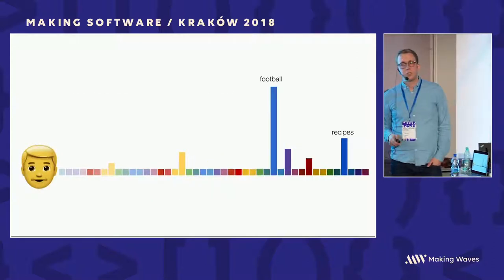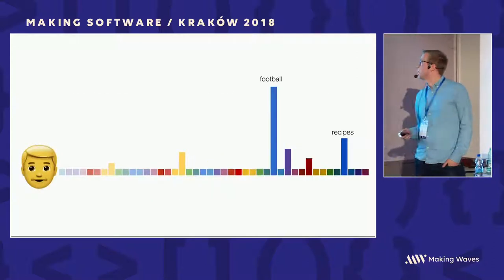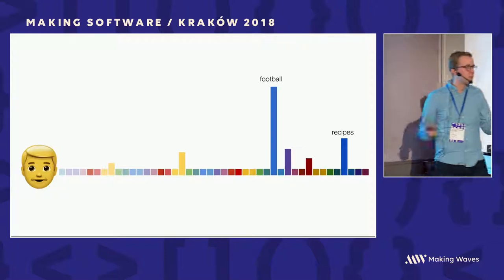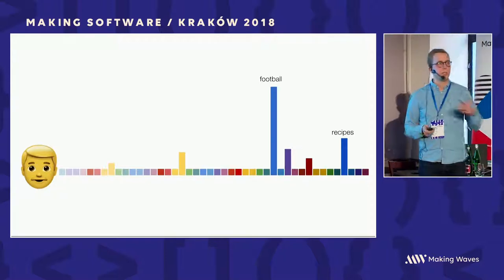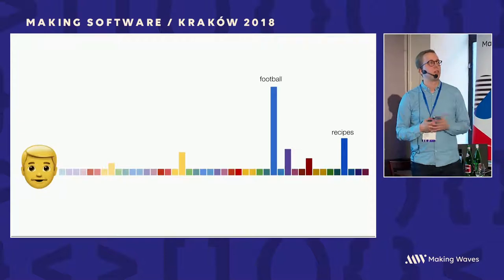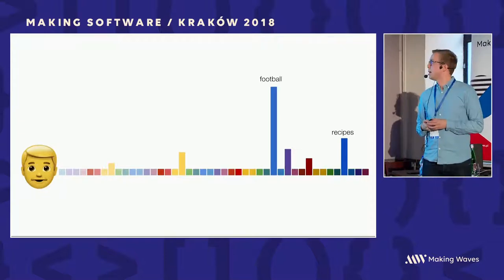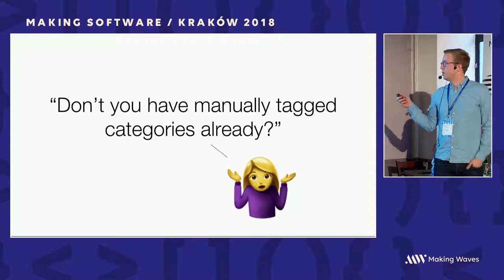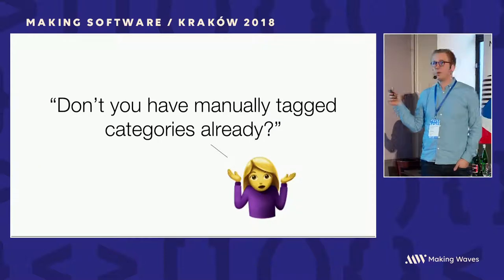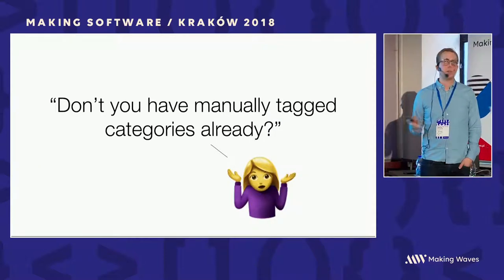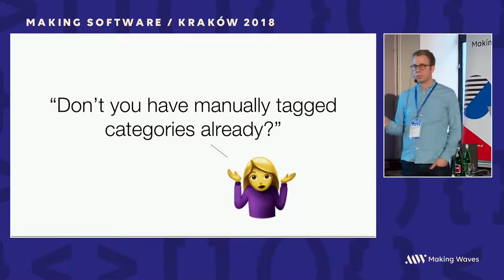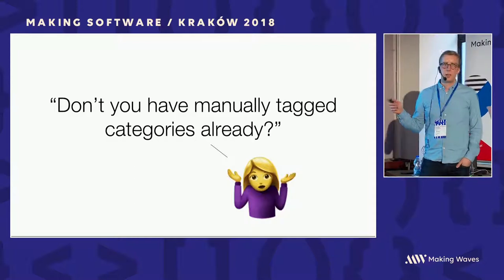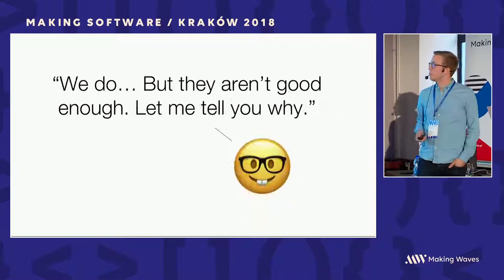For instance, this person is into football and recipes, and we can learn this. If you have good categorization, we can see what type of content someone consumes and build on top of that. But now you might ask: don't you already have manual categories? Isn't that a standard feature of any CMS? And you are right about that — but there are still some problems with it.